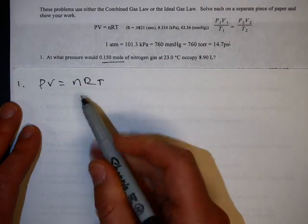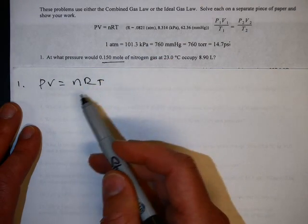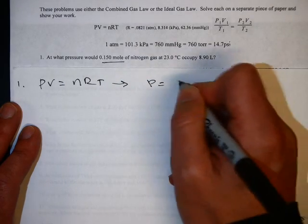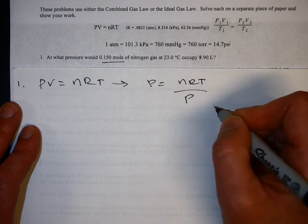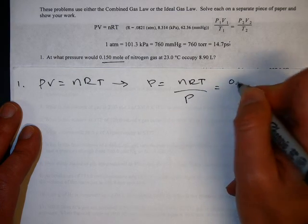When you do this problem, it's probably easiest just to rearrange for pressure first. So if you do that, pressure equals NRT over V. Then you plug in.